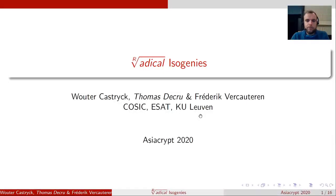Hey everyone, welcome to Virtual AsiaCrypt 2020. My name is Thomas de Crüe and I'll be presenting our paper called Radical Isogenies, which is joint work with Wouter Kastryk and Friedrich Verkauteren.